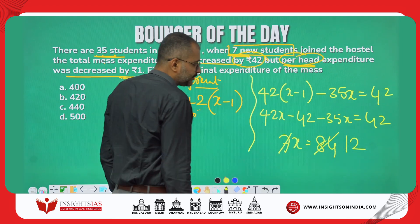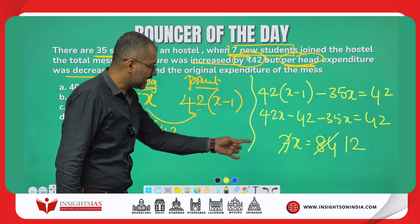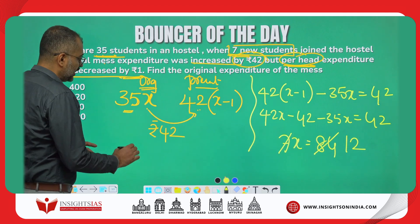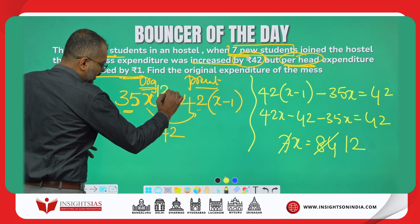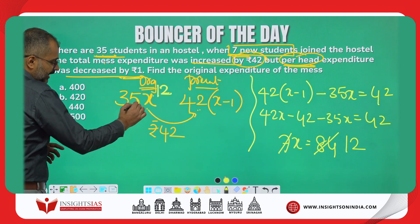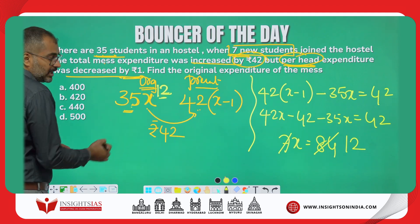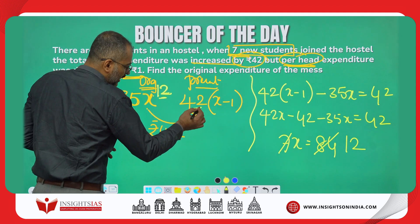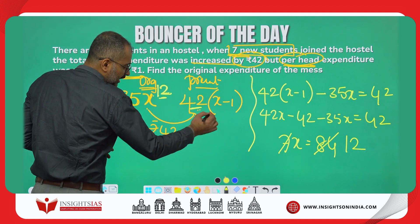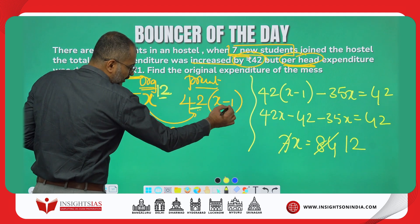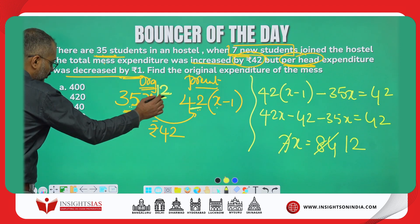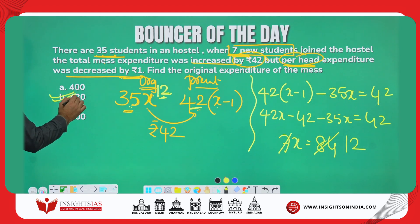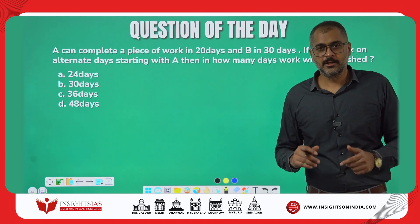So x = 12. Originally 35 people were eating, each paying 12 rupees. Now 42 people are eating, each paying 11 rupees. 35 × 12 = 420. So the answer for this question is rupees 420.